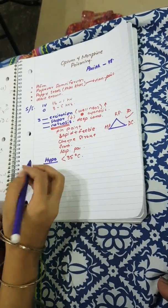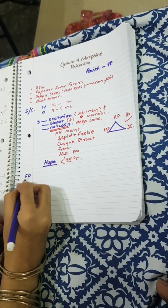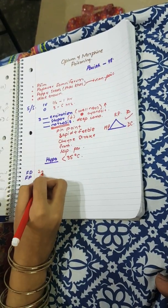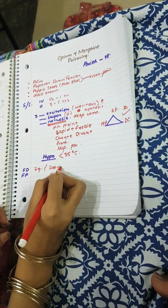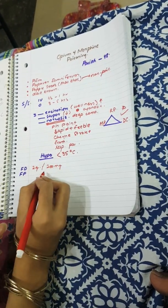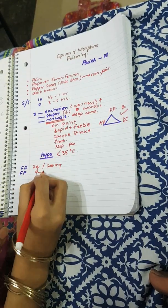Next we need to know the fatal dose and fatal period. Fatal dose is almost 2 grams for opium and almost 200 mg for morphine. And the fatal period is about 9 to 12 hours.